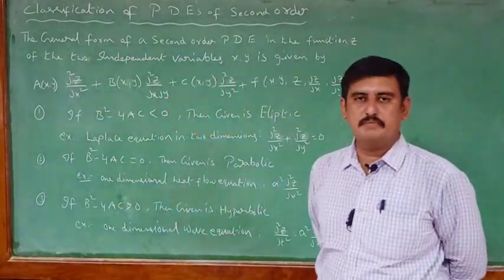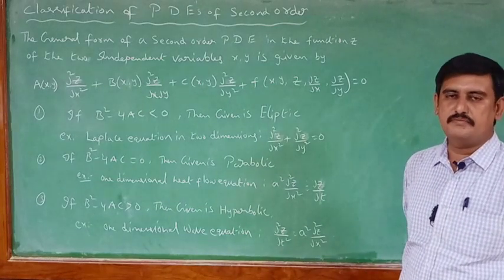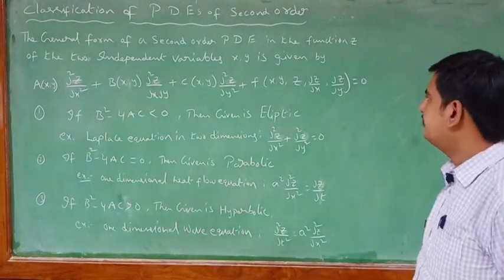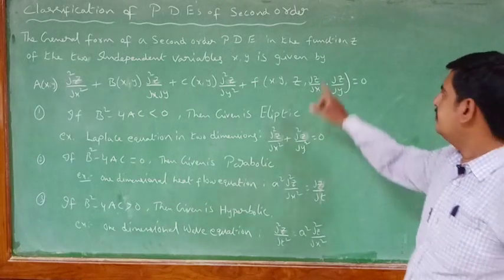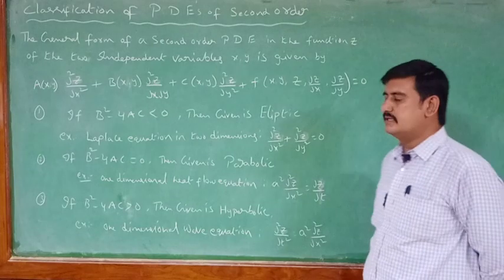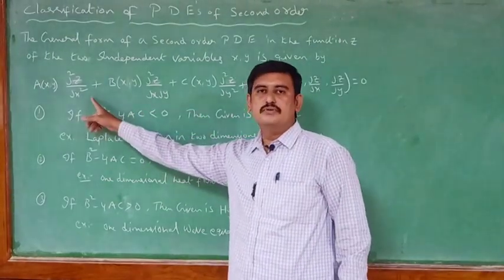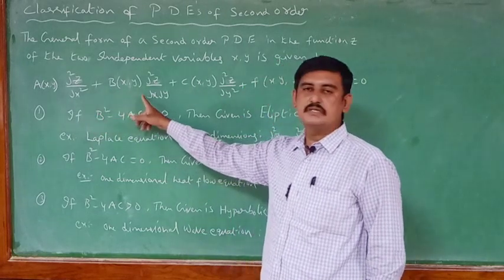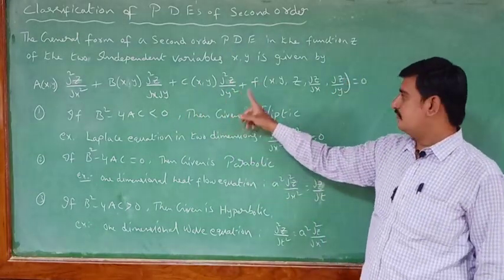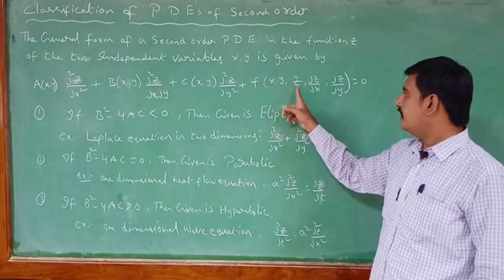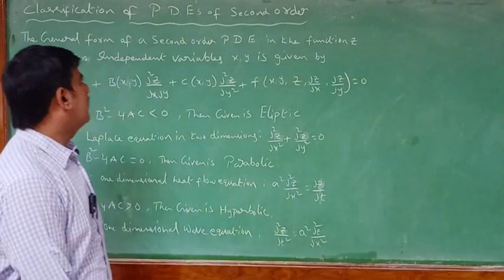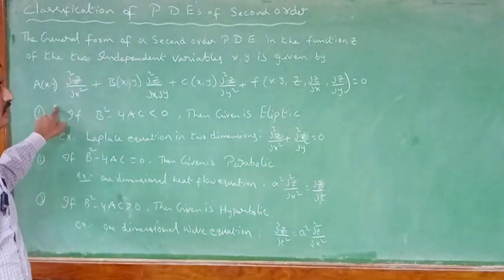When discussing the classification of second order partial differential equations, we have mainly three types. The general form of a second order PDE in the function z of two independent variables x and y is: A(x,y) ∂²z/∂x² + B(x,y) ∂²z/∂x∂y + C(x,y) ∂²z/∂y² + F(x, y, z, ∂z/∂x, ∂z/∂y) = 0.